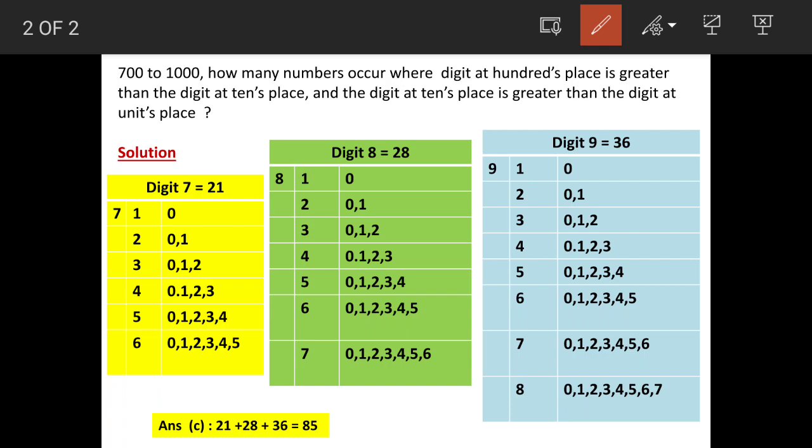So here we have numbers starting with digit 7 and total 21 such numbers are possible because when we have 7 at hundred's place, so at ten's place, number from 1 to 6 can be placed. And when we have 1 at ten's place, then only possible number at unit's place is 0. So the number becomes 710.